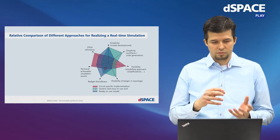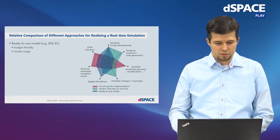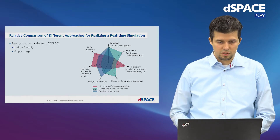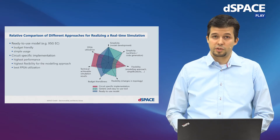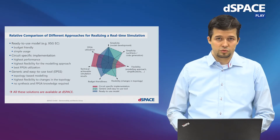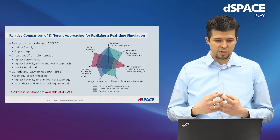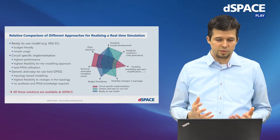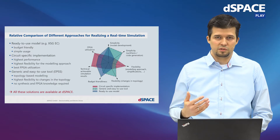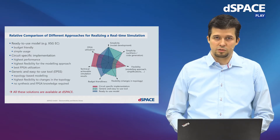When we take a look at the specific advantages of each solution, we find that the ready-to-use model is much more budget-friendly and simple to use. The circuit-specific implementation is used when we need the highest performance — it has the highest flexibility in respect to the modeling approach and the best FPGA utilization. Then we have a generic and easy-to-use tool where modeling is based on the topology, giving the highest flexibility for changes in the topology.